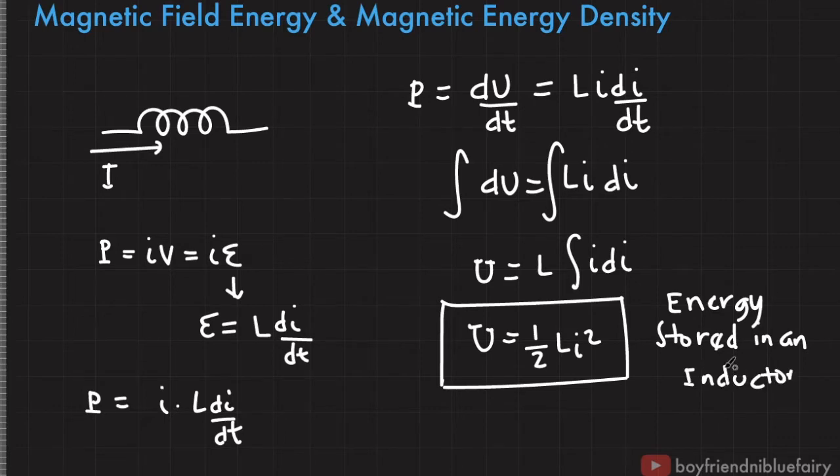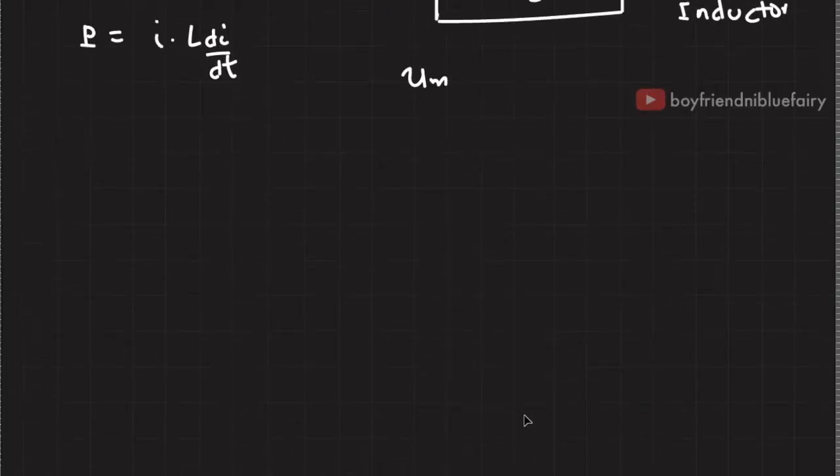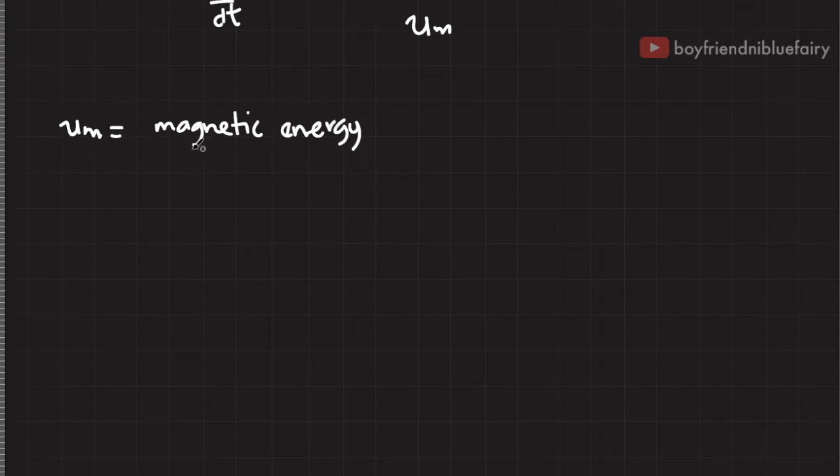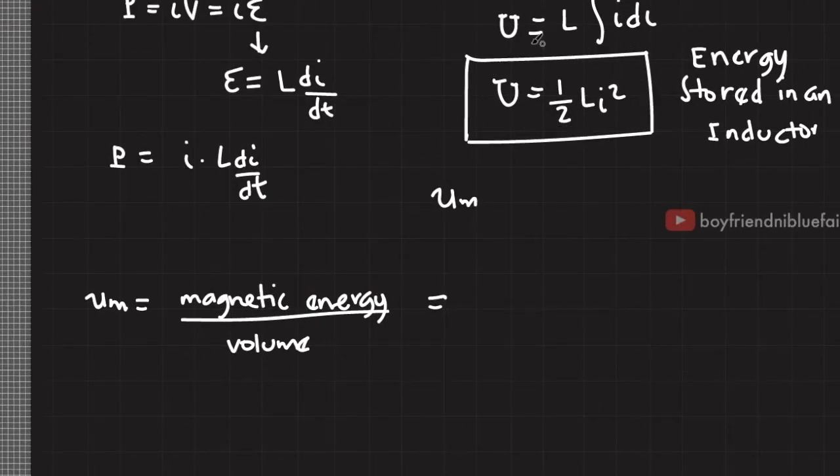Let's now derive magnetic field energy density U sub M. Because this will facilitate our discussion of electromagnetic waves. So as the name implies, when we say magnetic energy density, it is equal to magnetic energy divided by the volume enclosing that energy. We already derived the expression for magnetic energy, which is this one. So I'll just write it here, one half L I squared, and we divide it with the enclosing volume.